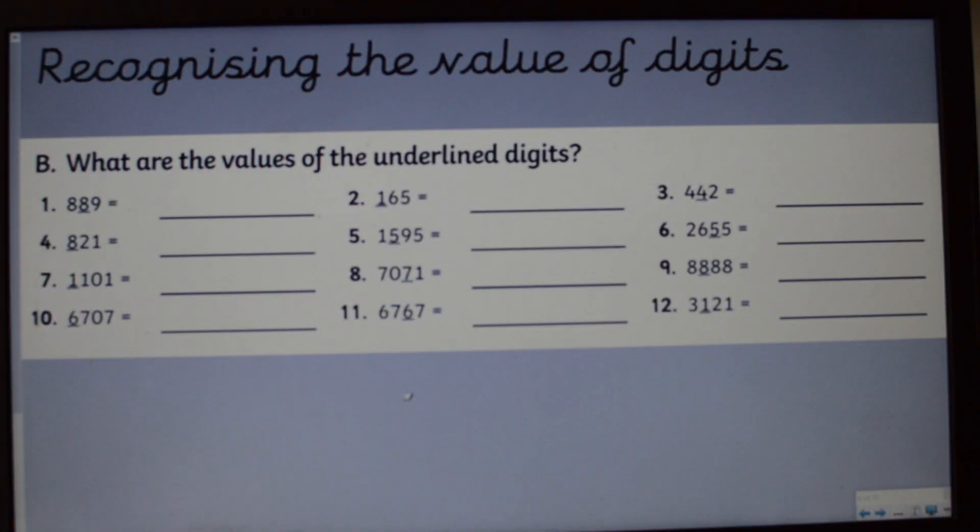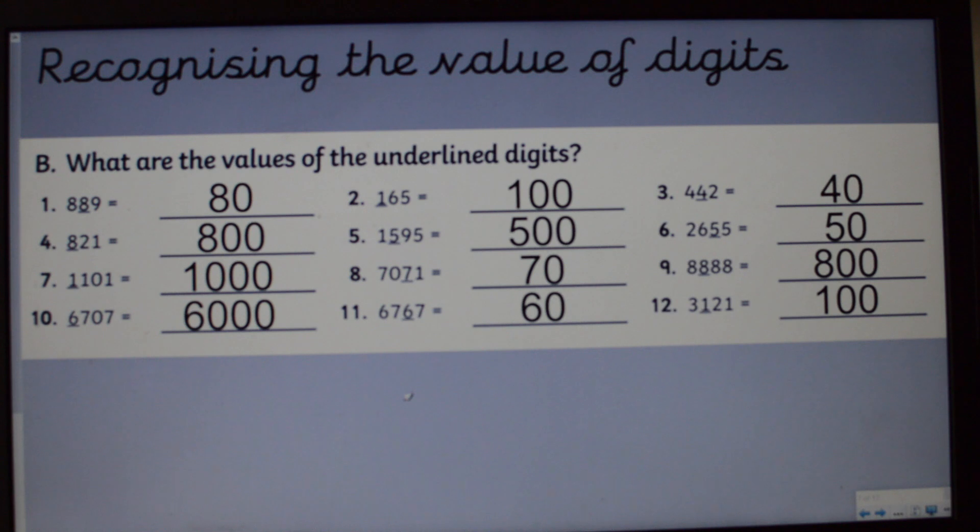I want you to have a little go yourselves now. Have a little look at each of these questions. Each number has got one of the digits underlined. Can you see in number one how the second eight has been underlined? What I would like you to do is to write down the value of each of the underlined digits. So for number one, the answer would be eighty. Pause the video now and have a go yourself. Right, how did you get on? Did you manage to find all these answers?